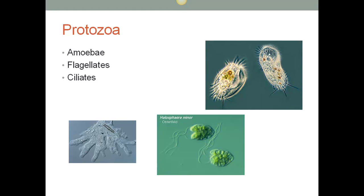Protozoa are the simplest life form — those with flagella have a little tail. Most of you remember amoeba and ciliates. There are not a lot of protozoal infections in the United States; the one we see occasionally is Giardia, or traveler's diarrhea.